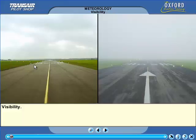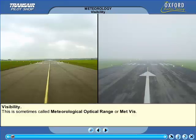Visibility within the atmosphere is of great importance to pilots and aviation in general. Visibility is a crucial factor in all VFR flights and has significant influence on the legality of landing or take-off. Meteorological Optical Range or METVIS is described as the greatest horizontal distance at which a dark object can be recognised by an observer with normal eyesight. Alternatively, if it is dark, visibility is a measure of how many lights of a specified candle power can be seen. Put simply, visibility is a measure of the atmospheric clarity or obscurity.